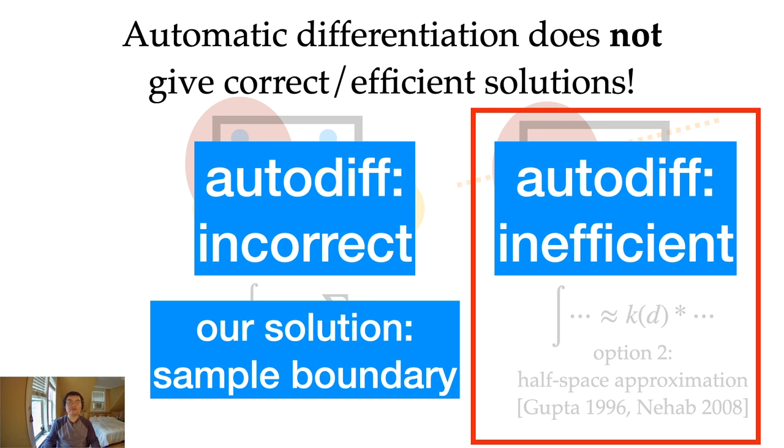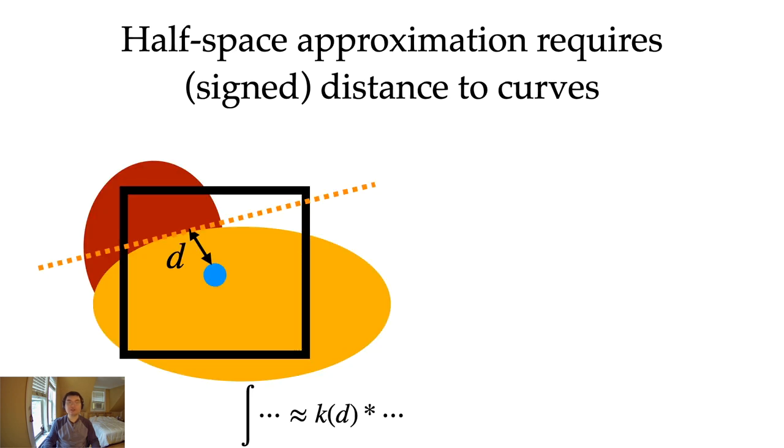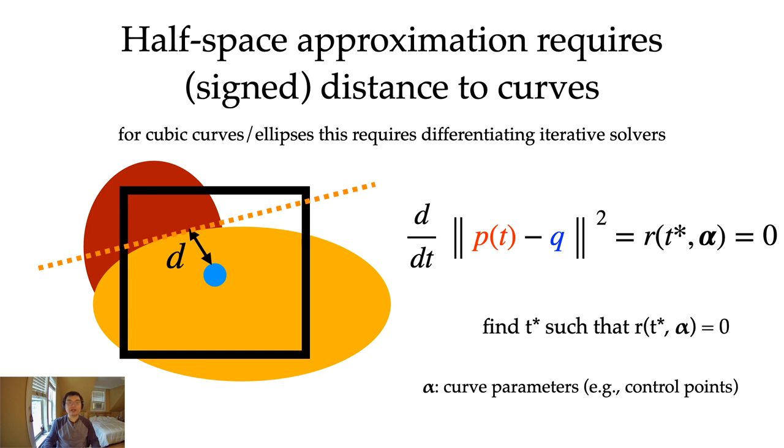Now I will explain the problem of differentiating the half-space approximation. Automatically differentiating the half-space approximation does give us the correct result because we simplify the integral into a differentiable expression. However, this means that we need to differentiate through the distance to curves. And for cubic curves or any curves that doesn't have a closed-form distance, we need to differentiate the iterative solvers. Remember that we can turn the distance into some optimization problem where we find the roots of the derivatives. Let's call the derivative function R, and it depends on some curve parameters alpha. We want to find a t* such that the derivative function evaluates to zero, and we want to differentiate this process.